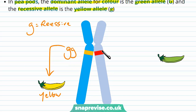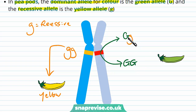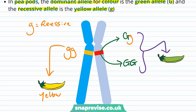Any time we have the presence of a dominant allele — the capital G — whether that's two of them, or whether it's with a recessive one, the dominant one always takes hold. So these always give rise to a green pea pod.